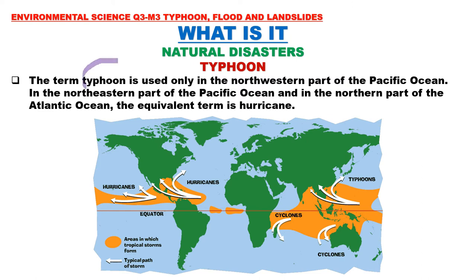The term typhoon is used only in the northwestern part of the Pacific Ocean. In the northeastern part of the Pacific Ocean and in the northern part of the Atlantic Ocean, the equivalent term is hurricane. In the southern hemisphere, this weather disturbance is called a cyclone. The Philippines falls under the northwestern Pacific, where the term typhoon is used.